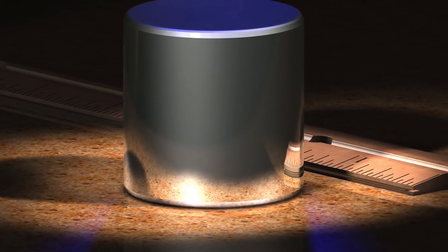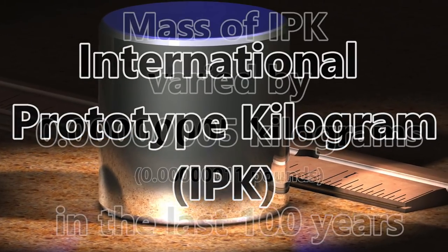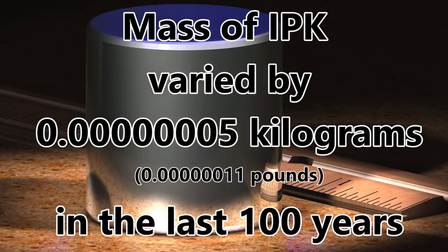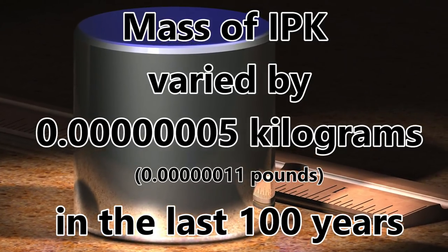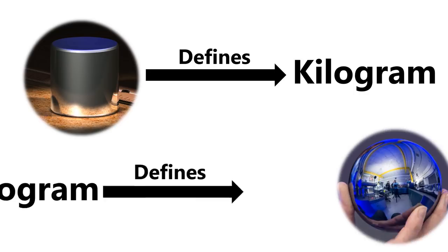The problem is the previous way to define the kilogram, the international prototype kilogram, seems to have changed a bit depending on the location, which is not an ideal situation. You know, this is where the silicon spheres come in. Right now, the kilogram is defined by the amount of mass that is available in the international prototype kilogram, but it is the other way around for those silicon spheres.